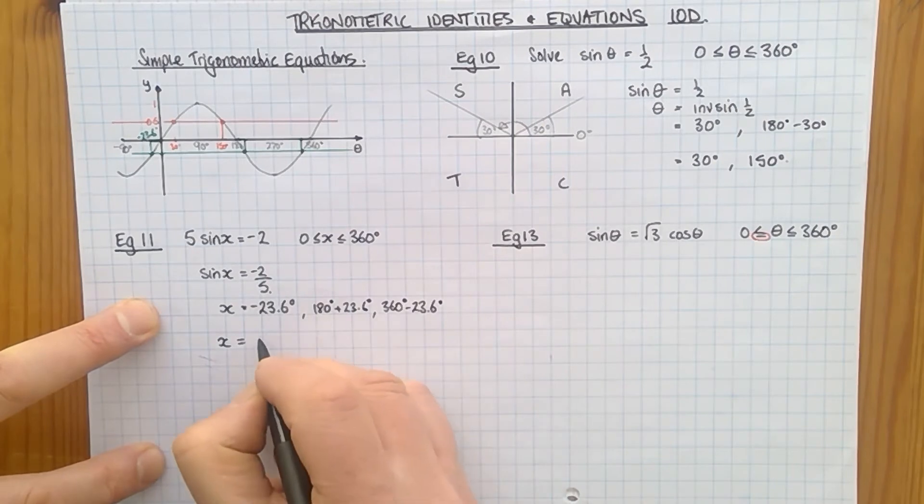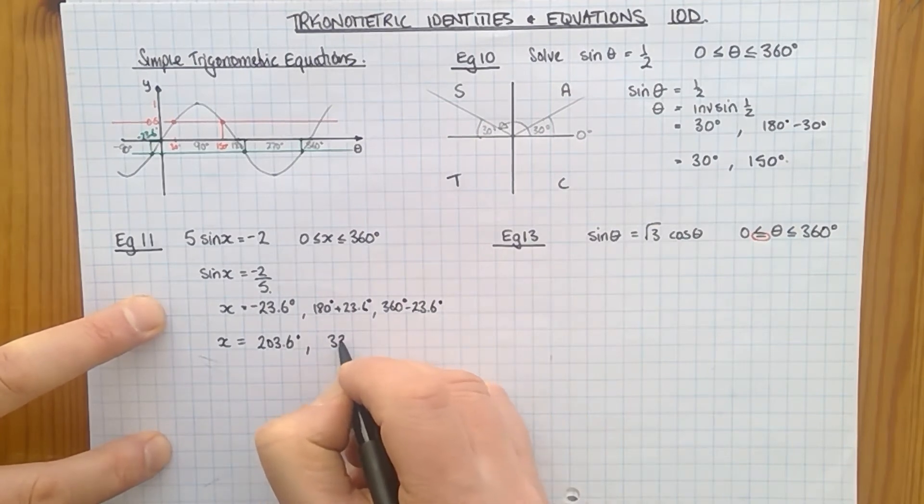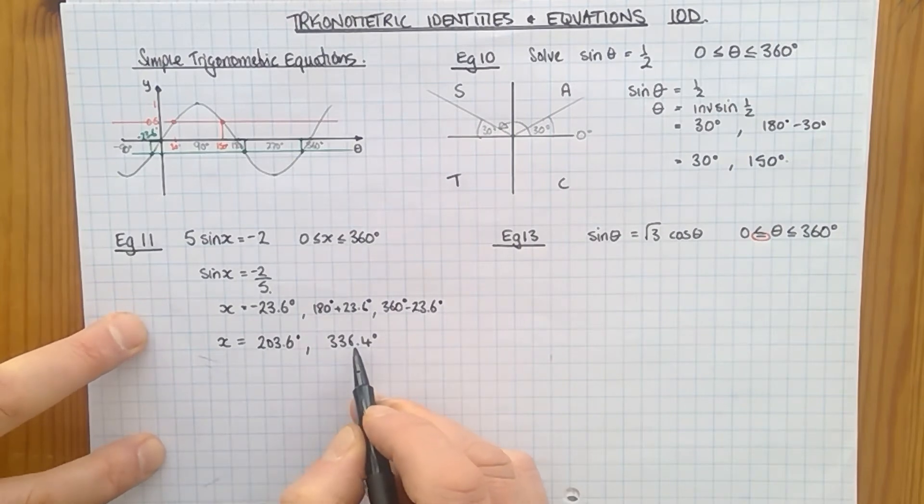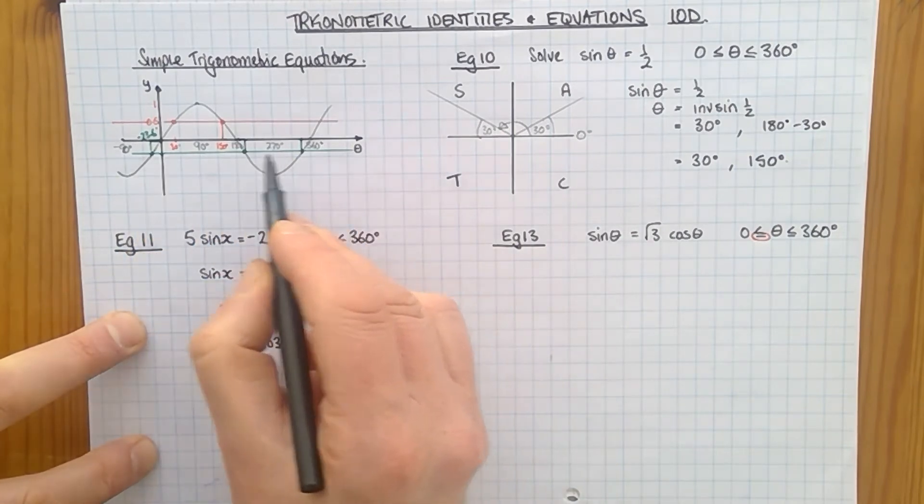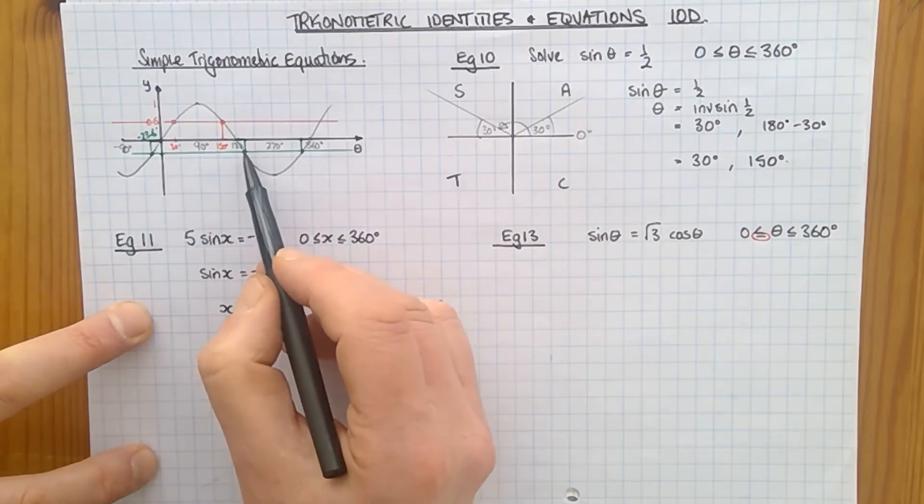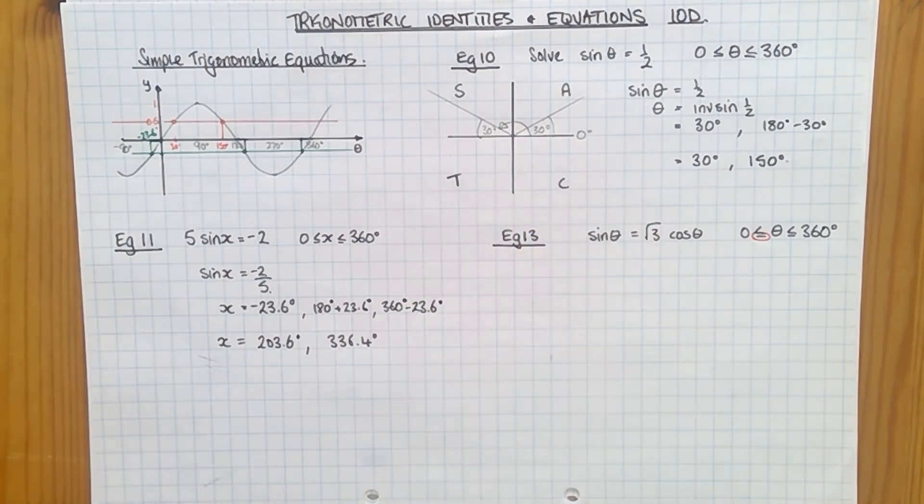So my final values are not that one because that's not in the range. This one gives me 203.6, and this one gives me 336.4. Those are my only two values where the line for y equals minus 0.4 crosses the sine curve.